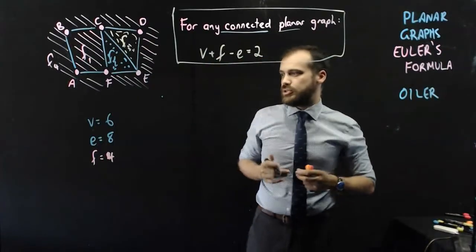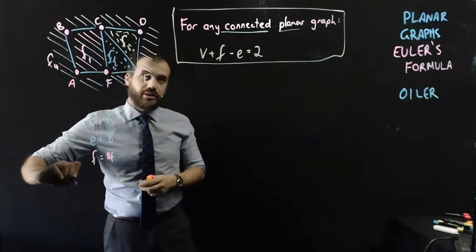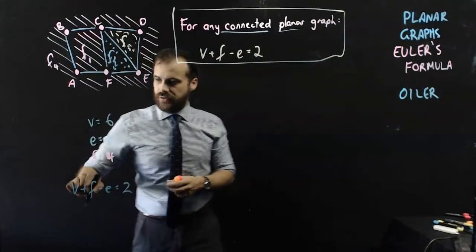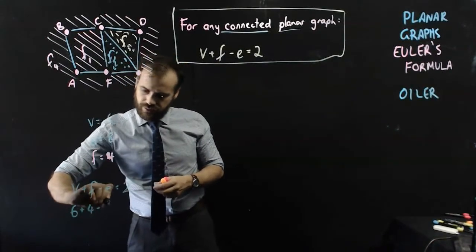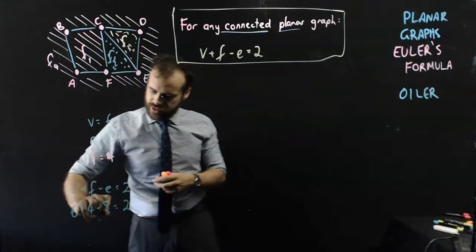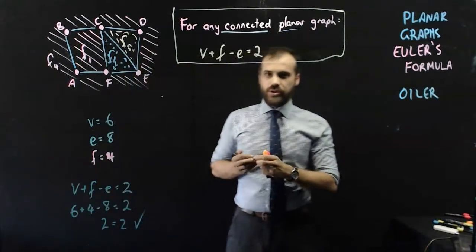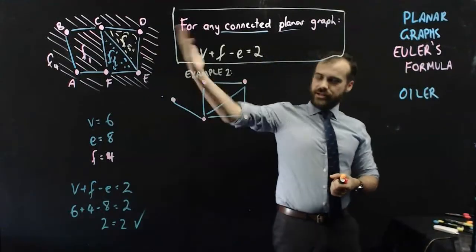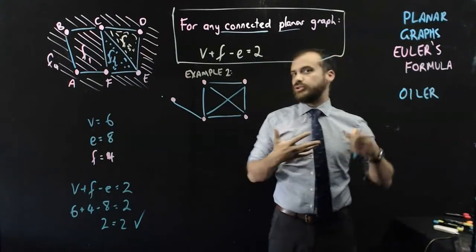V plus F minus E equals two. Let's see if that's true with this particular graph. I really hope so, because otherwise Euler's going to be very upset. Alright, V was six. Faces is four. Minus E is eight. Equals two. Six plus four minus eight. Two equals two. Good. Euler's formula still holds. So we'll call that example one. We've done it now. We know what the formula is. Let's do a second one, make sure we understand this.